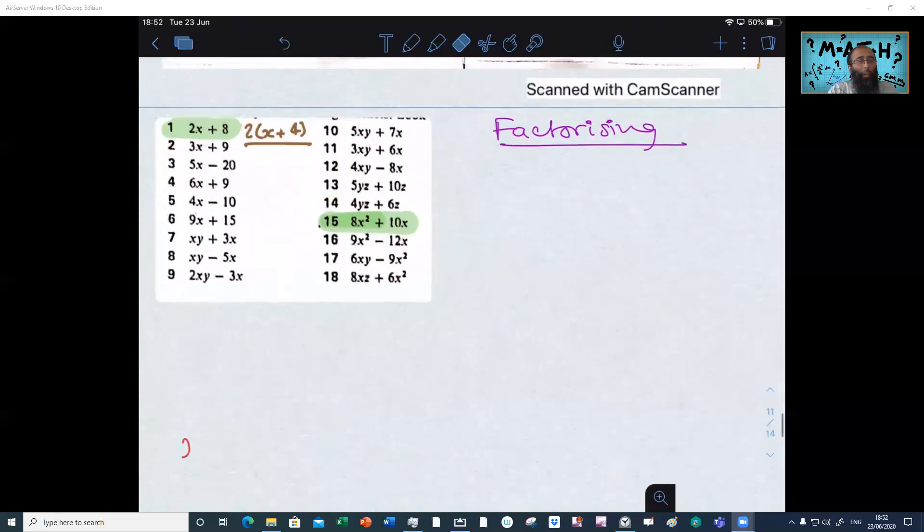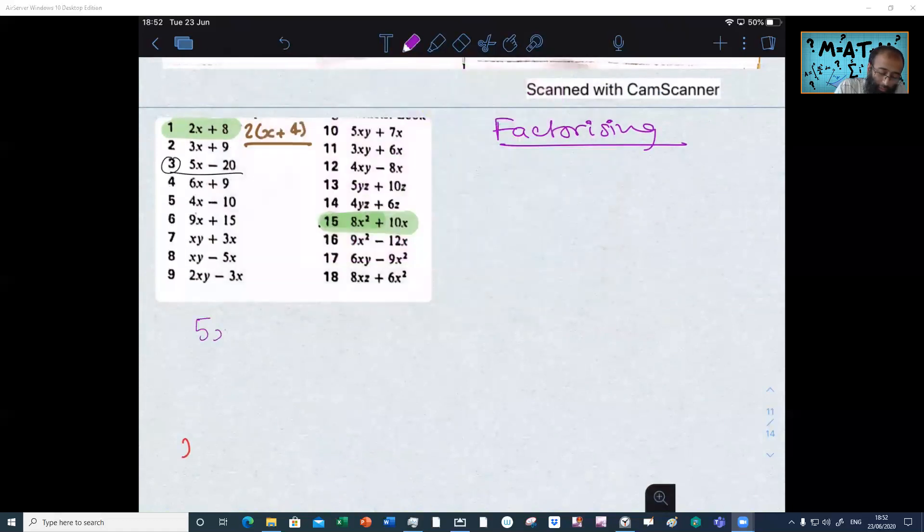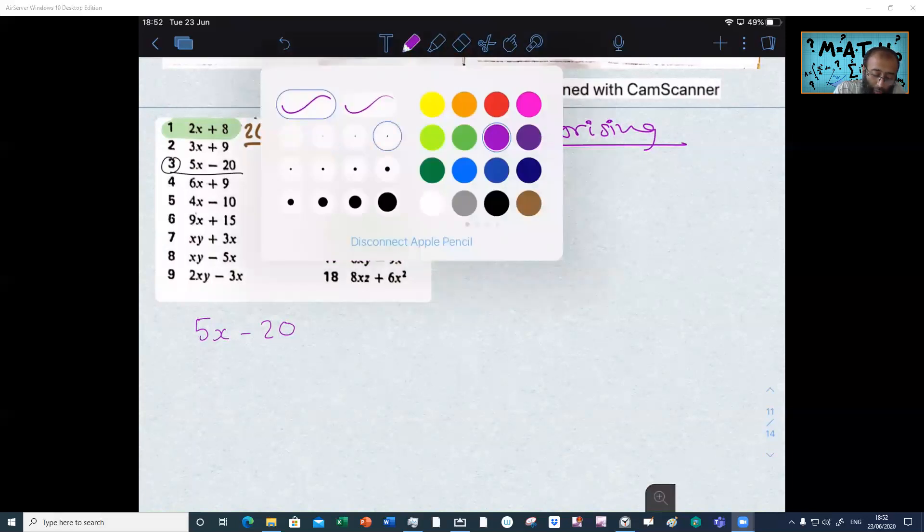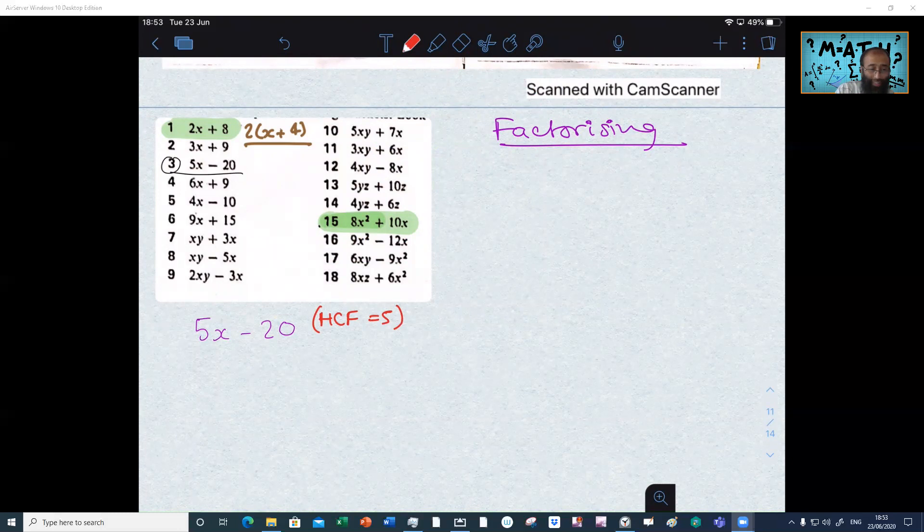So these questions have been cut from the above exercise. Let's choose, for example, question number 3. So question number 3, Leila, 5x minus 20. We need to factorize this question here, 5x minus 20. How do we go about doing that? So the highest common factor would be 5. So it's 5 and then in the brackets it's just x take away 4.